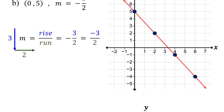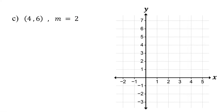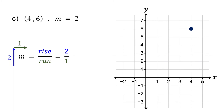Now, let's try something interesting. What happens if the slope takes you off the coordinate plane? As always, start by plotting the point. Notice that the slope is 2, which is the same as 2 over 1. So, the rise is 2 units up, and the run is 1 unit to the right. However, moving up 2 units from the point takes us out of the coordinate plane. So, what should we do?